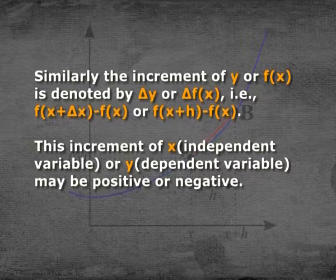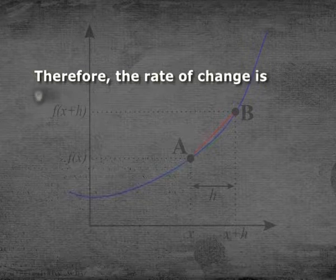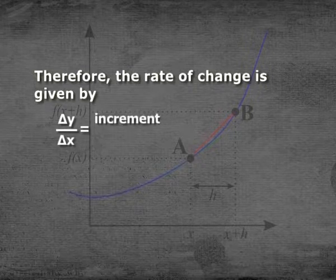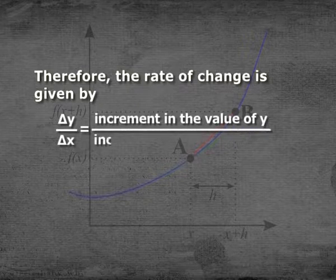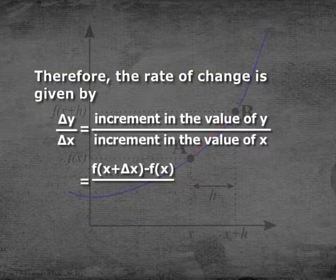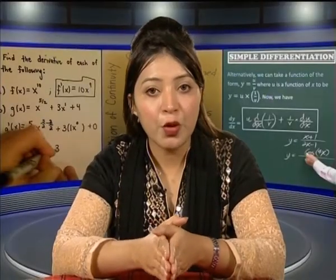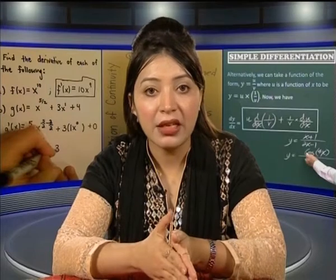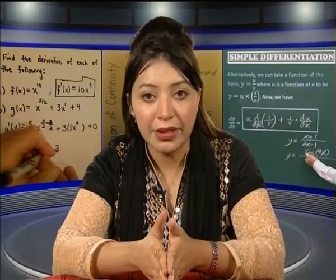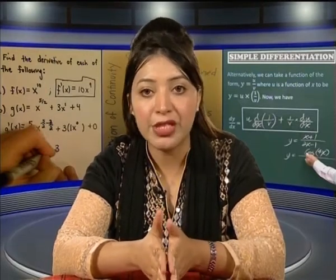Similarly, the increment of y or f(x) is denoted by Δy or Δf(x), that is f(x + Δx) − f(x) or f(x + h) − f(x). This increment of x (independent variable) or y (dependent variable) may be positive or negative. Therefore, the rate of change is given by Δy/Δx = [f(x + Δx) − f(x)] / Δx, or [f(x + h) − f(x)] / h. As Δx→0, if this ratio gives a definite finite limit, then this limit is called the differential coefficient or the derivative of f(x) with respect to x.